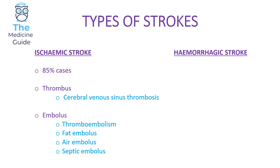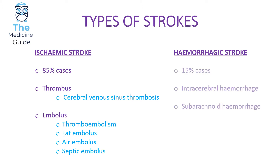An example of a septic embolus is the Libman-Sacks emboli, which are dislodged in patients suffering from infective endocarditis. Conversely, a hemorrhagic stroke is less common than an ischemic stroke but still very important for exams and clinical practice. Hemorrhagic stroke occurs in 15% of UK stroke cases and can arise from an intracerebral hemorrhage or a subarachnoid hemorrhage.